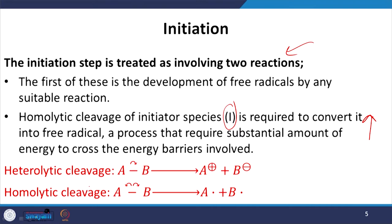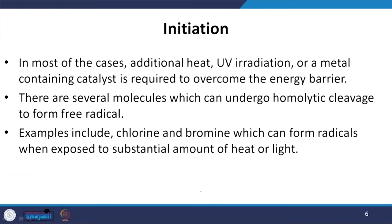There are two types of cleavages. One is heterolytic — here two species A and B undergo a transfer of charges to develop ions A⁺ and B⁻. The other is homolytic — the bond is broken and two radicals are generated, having sufficient energy to cross the energy barrier. In most cases, additional heat, ultraviolet irradiation, or metal-containing catalysts play a vital role in overcoming such energy barriers.